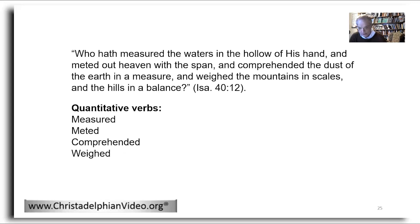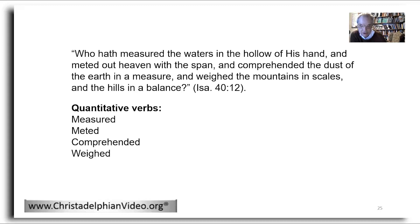Isaiah 40:12 speaks of God's use of number during creation, specifically with regard to measuring: 'Who hath measured the waters in the hollow of his hand, and meted out heaven with the span, and comprehended the dust of the earth in the measure, and weighed the mountains in scales, and the hills in a balance?' This verse uses four verbs relating to measuring — measured, meted, comprehended, and weighed. It gives indication not only of God's power in being able to measure such things as the heavens, dust, mountains and hills, but also shows the amazing precision and knowledge involved in creation.